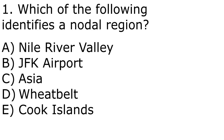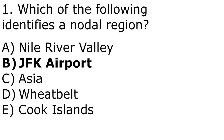The first question is on the screen. The correct answer is B, JFK Airport. So what is a nodal region? A nodal region is also called a functional region, and it functions around a node or a focal point. JFK Airport is the focal point — the place in New York is the node. All the airlines and airplanes going to and from the airport are connected to this region, all focused around the node, which is the airport itself.